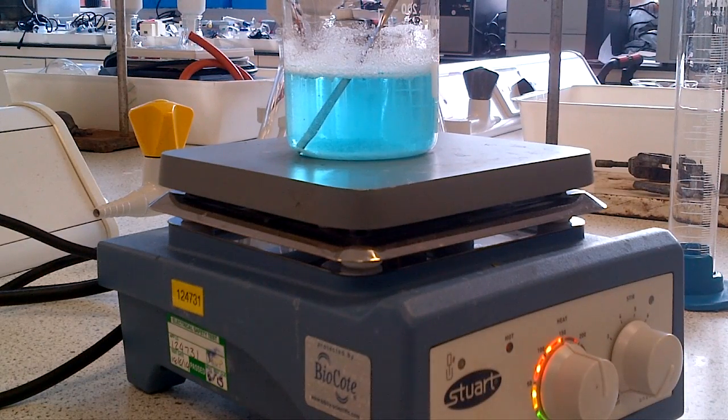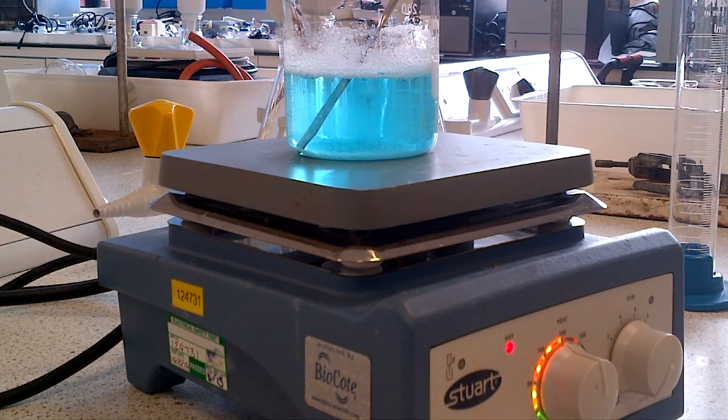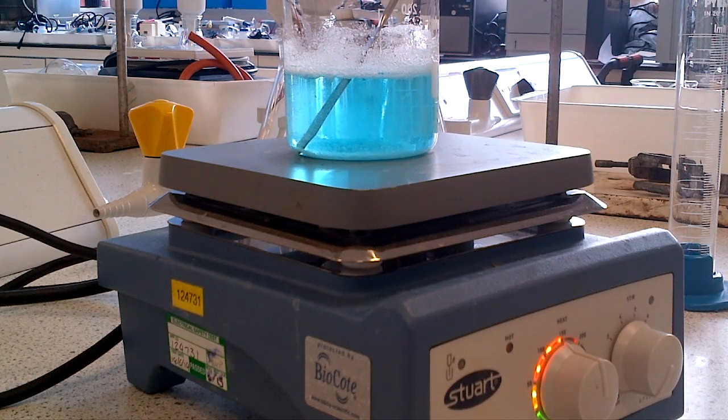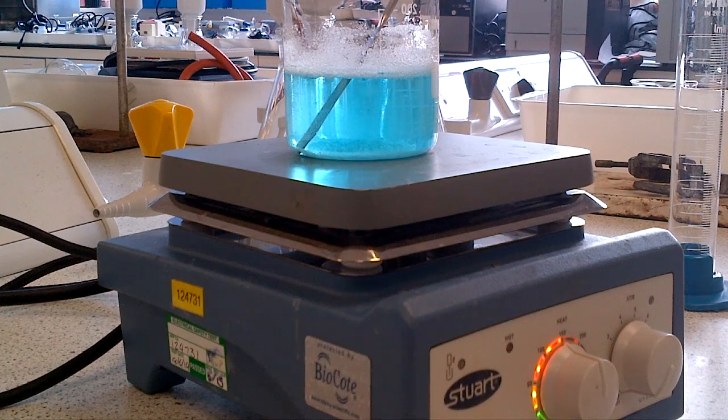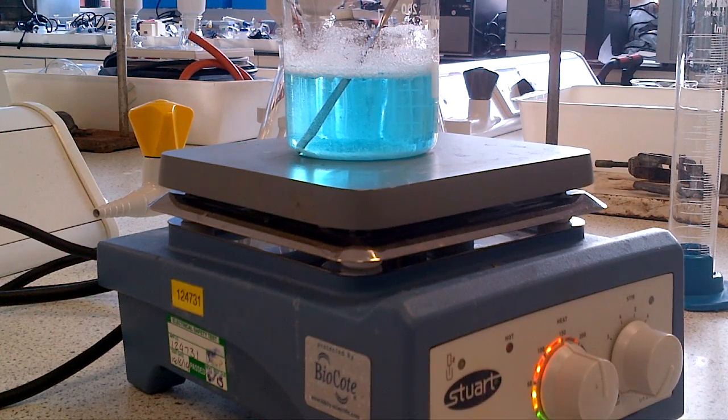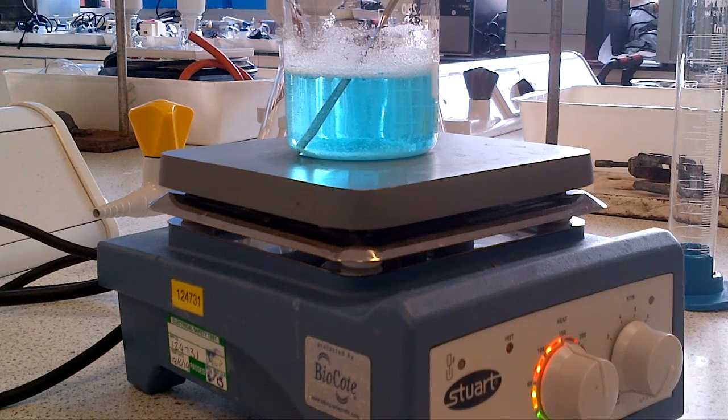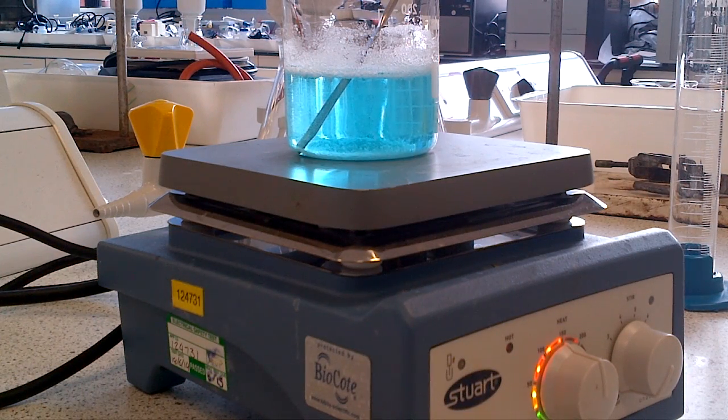So in this practical, the separation of a mixture into its components by fractional crystallization, you're going to need to use a hot plate stirrer to separate out this mixture of an inorganic copper sulfate and organic salicylic acid.